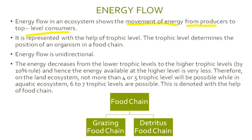Energy flow is represented with the help of trophic levels. The trophic level determines the position of an organism in a food chain. For example, plants or autotrophs are at the lowest trophic level, and tertiary consumers such as lion or vulture are at the highest trophic level. Energy flow is unidirectional.